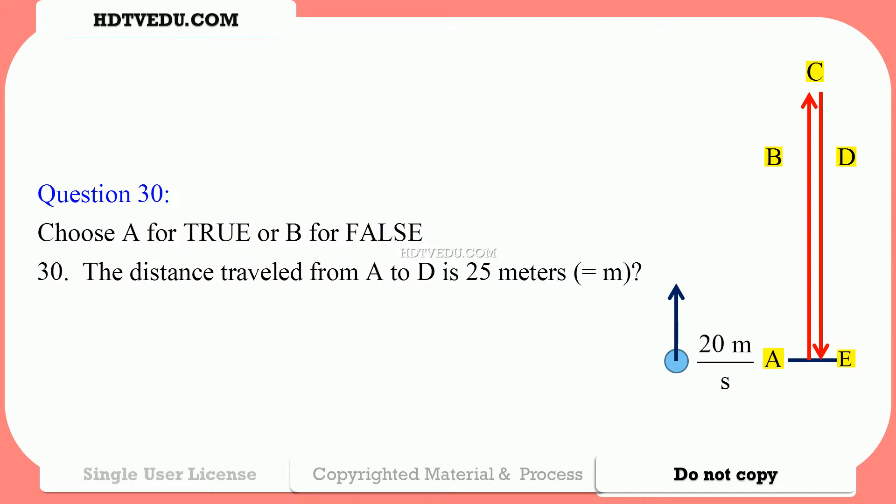Question number 30. The distance traveled from A to D, as in David, is 25 meters. True or false?